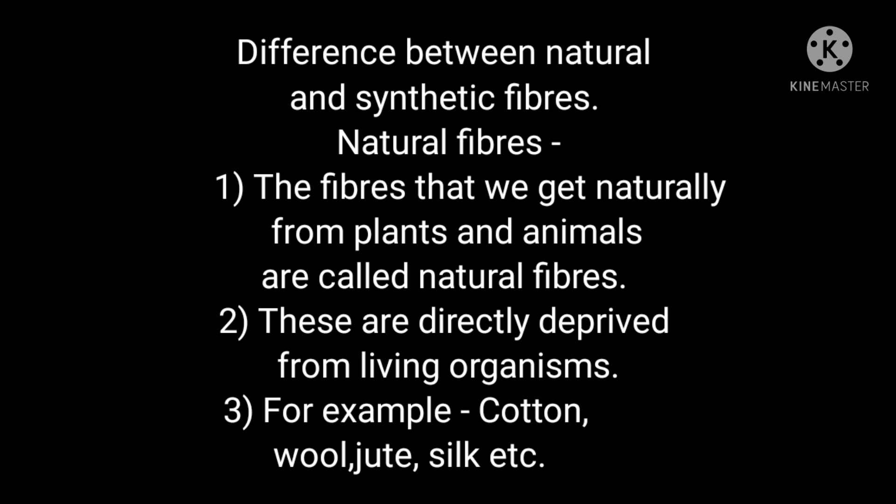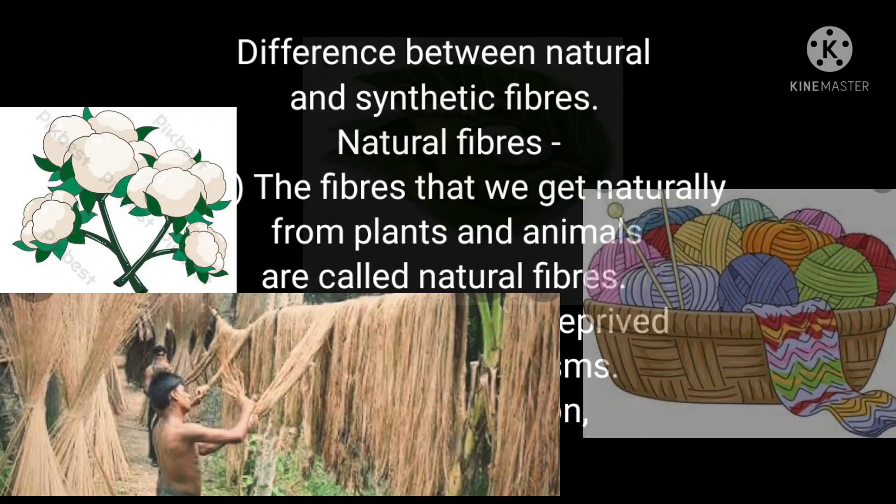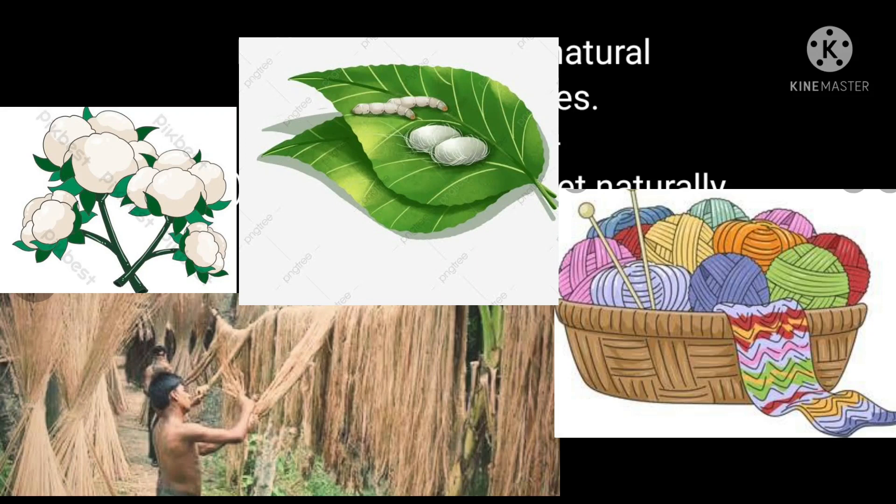Natural fibres are directly derived from living organisms. For example, cotton which we get from plants, wool which we get from animals, jute — again from plants — and silk — again from animals.